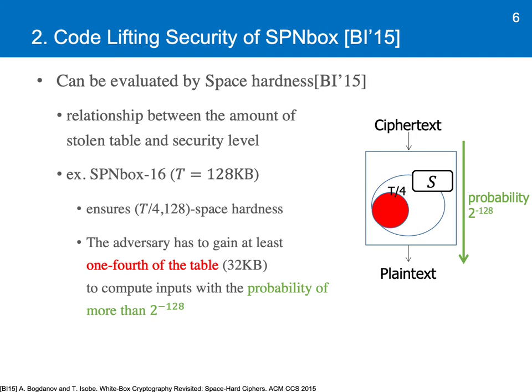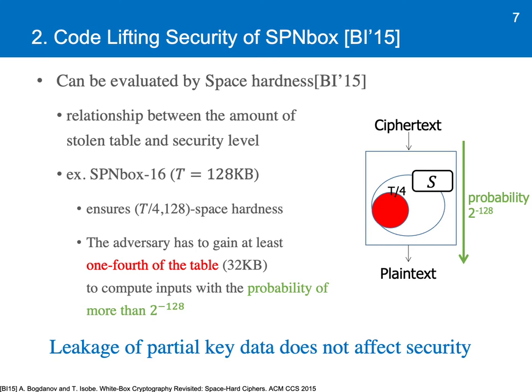When it comes to code lifting security, Bogdanov et al. proposed a security notion called space hardness to quantify the security level against the code lifting attack. Space hardness shows the relationship between the amount of stolen data and the corresponding security level. For instance, T over 4, 128 space hardness means that the adversary has to steal at least one-fourth of the table to compute the input with the probability of more than 2 to the power of minus 128. SPN box 16 provides this security level in terms of code lifting security.